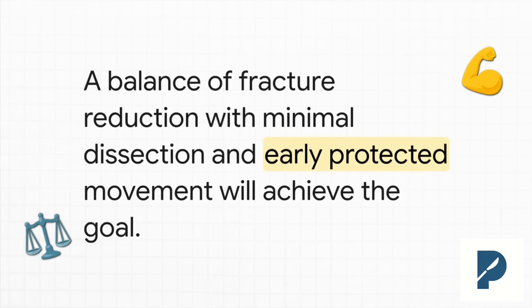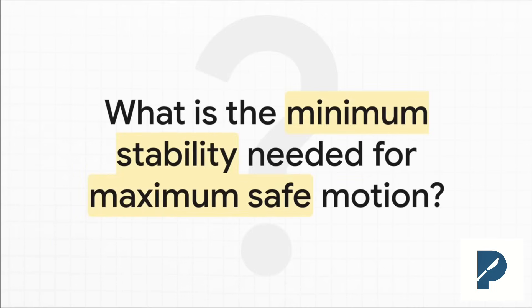If we take a step back and look at everything we've talked about, there's one unifying idea: it's all about this delicate balance. You need to get enough stability to hold the reduction, but do it with the least amount of dissection possible — all so you can start that early, protected movement to get the best final outcome. The question you should be asking yourself every single time is: what is the absolute minimum stability I need to allow for the maximum safe early motion? If you can answer that for every patient, for every fracture, you're on your way to truly mastering these injuries.